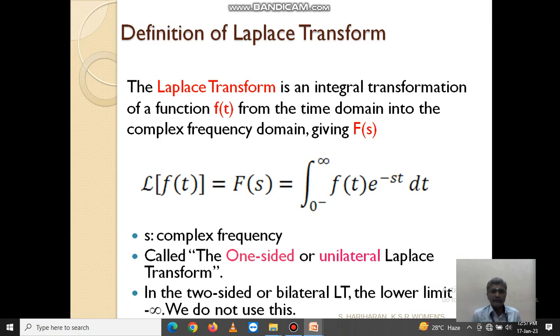That is, L[f(t)] = F(s) = integral from 0 to infinity of f(t)e^(-st)dt, where s is complex frequency. It is called the one-sided or unilateral Laplace transform because the lower limit is 0. If the lower limit is minus infinity, then it is called two-sided or bilateral Laplace transform.